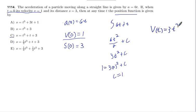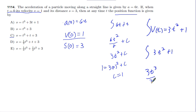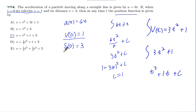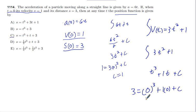So I've got my velocity function: v(t) = 3t² + 1. Now I integrate that again to get the position. Integrating 3t² + 1 gives me 3t³/3 + t + C, and the 3's cancel. Then I use the condition s(0) = 3: 0³ + 0 + C = 3, so C = 3. Therefore the position function is s(t) = t³ + t + 3. Looks like that's what most of y'all said at the beginning — good job.